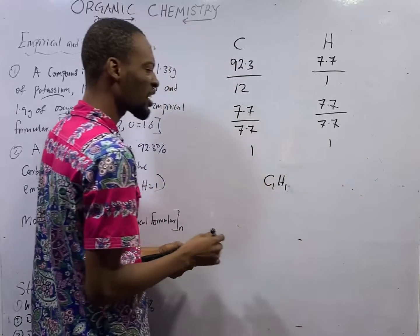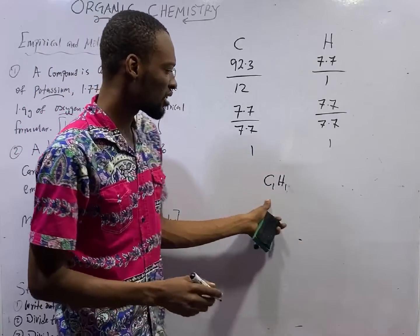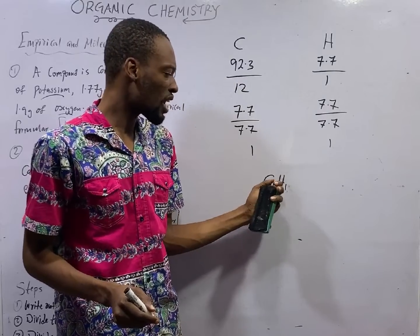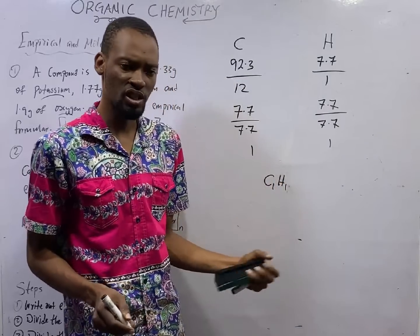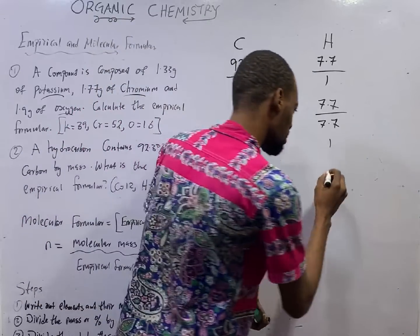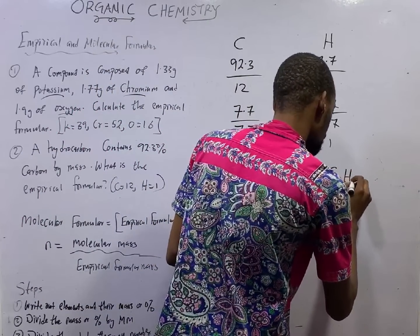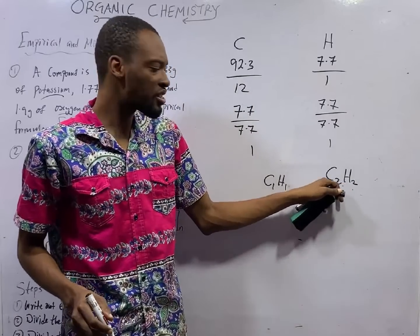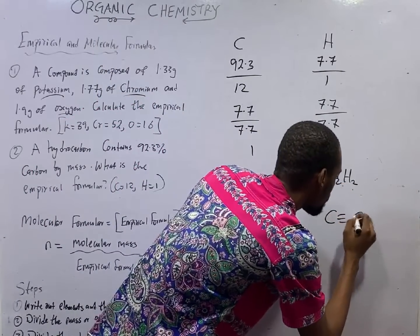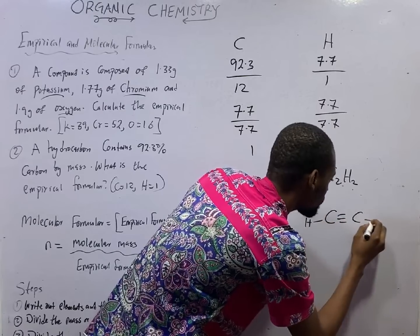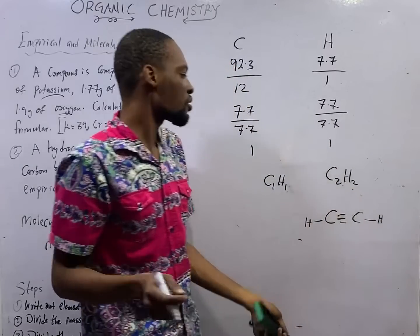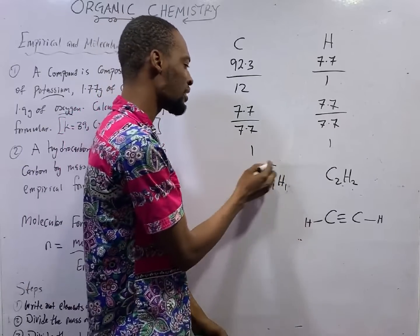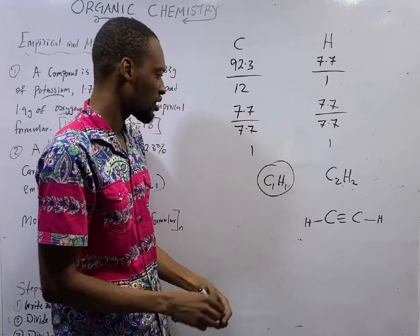In organic chemistry, there is no compound called C1H1, but we have compounds where carbon and hydrogen are in a 1:1 ratio. An example is C2H2, which has 2 carbon and 2 hydrogen — that would be the molecular formula. But we were only asked for the empirical formula, which is CH.